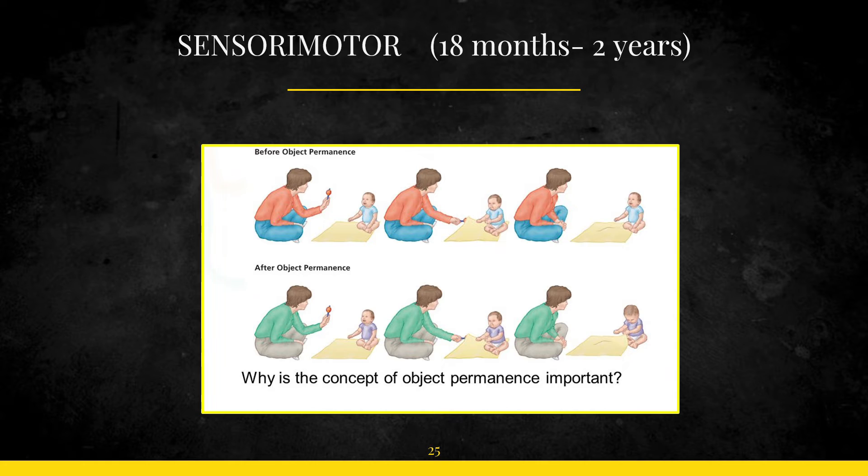They also at this stage develop an attribute to animate objects. So they animate doors, furniture, toys. So if you've noticed situations where if a child is running around and it gets hit by the door, it gets very happy if an elder person or a guardian or the parent hits the door and says the door is a bad boy. So the child suddenly feels a sense of happiness because for the child the door is an animated object. So animation is a very characteristic of the sensory motor phase.